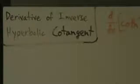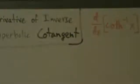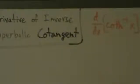Now we're going to go ahead and do the derivative of the inverse hyperbolic cotangent. Now that we've already done arcsinh, arccosh, and arctanh, this one and the next two — inverse hyperbolic secant and inverse hyperbolic cosecant — are not going to be that bad.